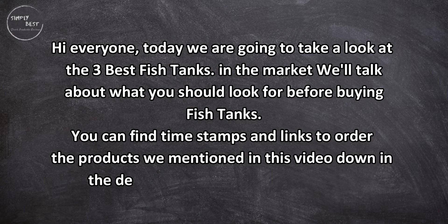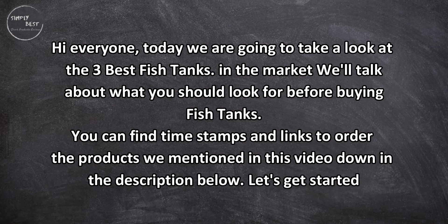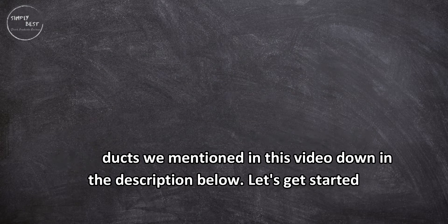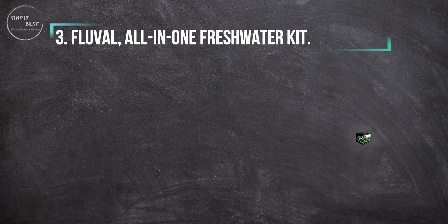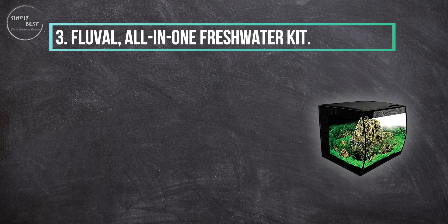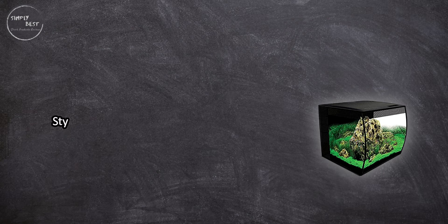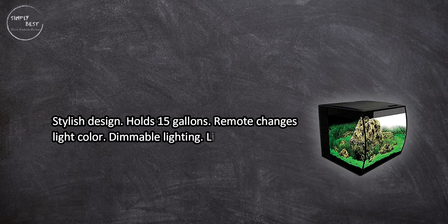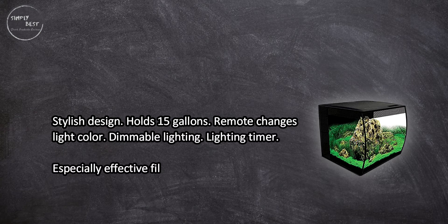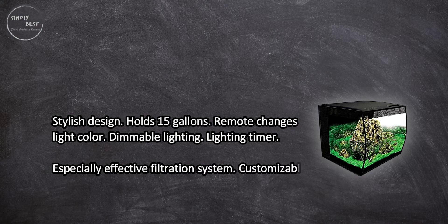Let's get started. At number three, Fluval all-in-one freshwater kit: stylish design, holds 15 gallons, remote changes light color, dimmable lighting, lighting timer, especially effective filtration system, customizable water flow, available in black and white.